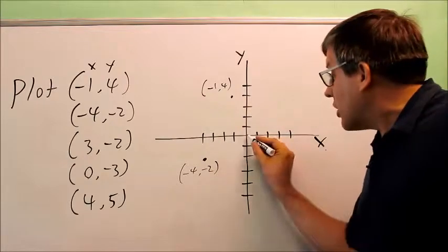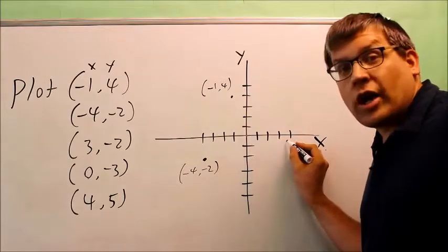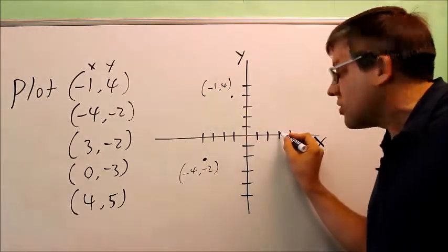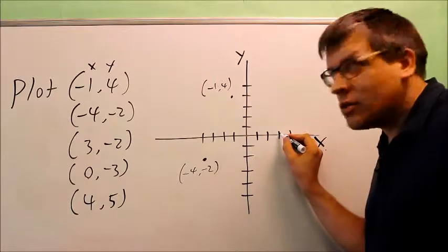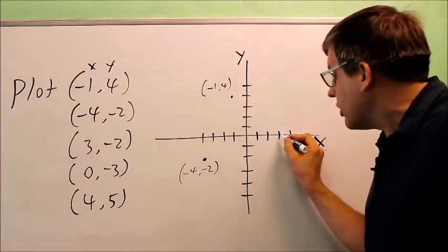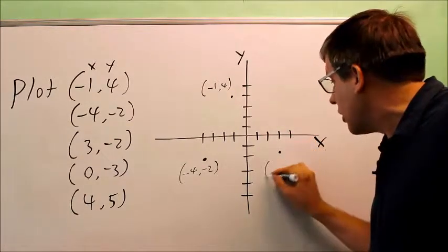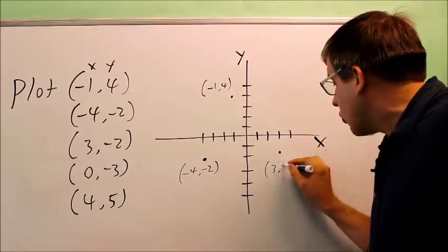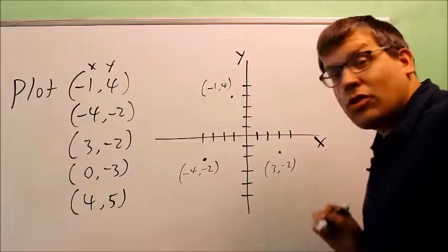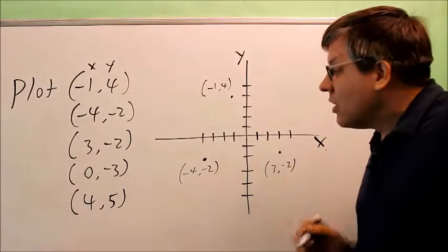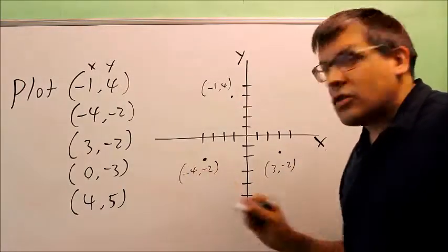Next I have three, negative two. Since the X value is positive, I need to go to the right three places — one, two, three — and then go down two units. So right here is where three, negative two belongs.